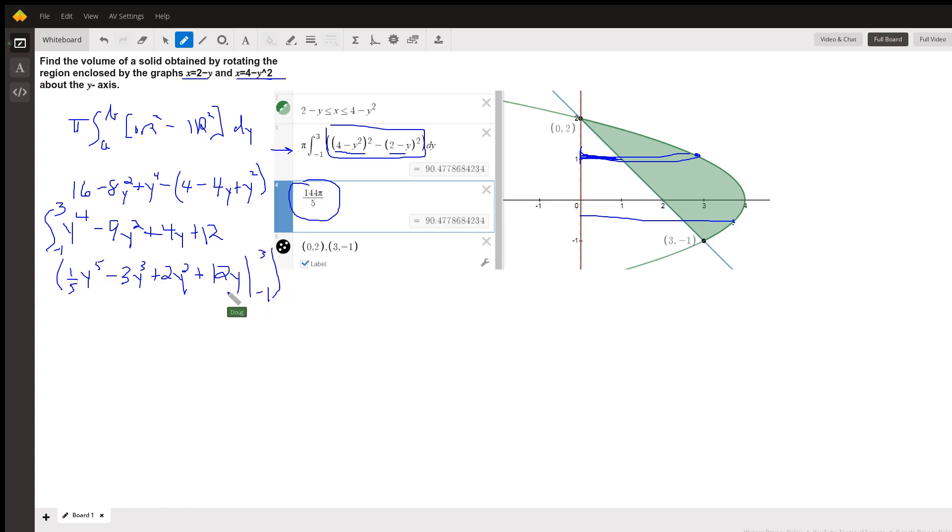And that whole thing, we would be multiplying by π. Of course, evaluating from negative 1 to 3 means put 3 in for y, minus put negative 1 in for y. And we get a bunch of fractions with 5s in them. So I'd convert everything to fifths after you've combined similar terms. And 144π over 5 is what you get. There you go.